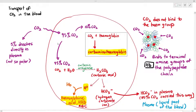Hydrogen carbonate ions are anions — they are polar molecules with charges — and because they are polar, it is very easy for them to dissolve in the plasma. That is why most of the carbon dioxide, 85% of it, is actually transported this way. This is the complicated nature of how carbon dioxide is transported.